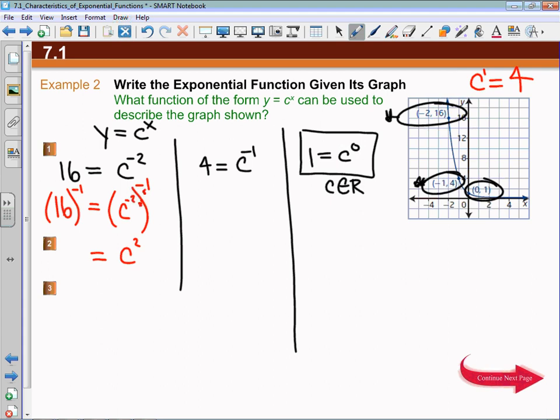On the left-hand side, 16 to the power of negative 1 is 1 over 16 to the power of positive 1, but we don't write that. Now, if I have that 1/16th is equal to c squared...